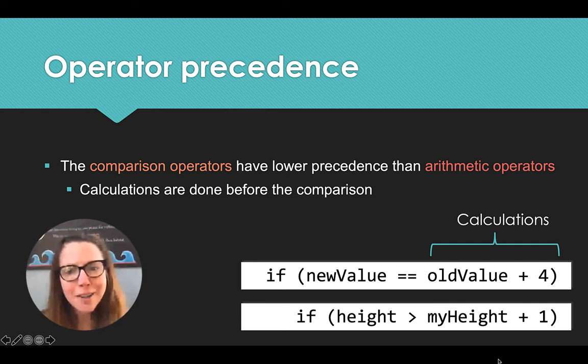We don't want to check that new value and old value are equal and then add four, but we're actually checking that the new value is equal to the old value plus four. And thankfully, that is what it does. And that's because comparison operators, that equals, greater than, less than, not equal to, they have lower precedence than arithmetic operators. So the calculations are done before the comparison.